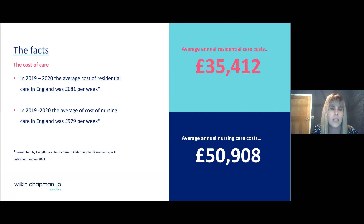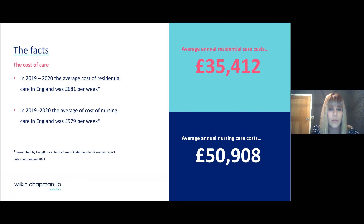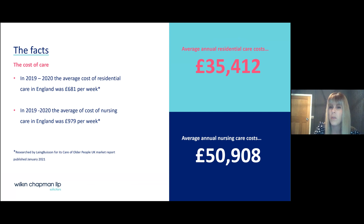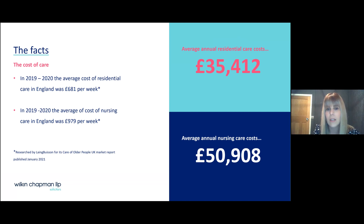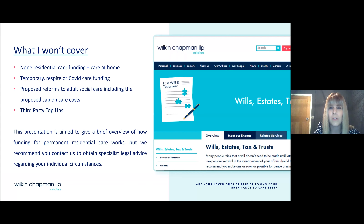In 2019 to 2020, the average cost of residential care in England was £681 per week, and for nursing care that was £979 per week. This gives annual residential care costs of over £35,000 and annual nursing home costs of over £50,000. You can see why a lot of clients are worried about this potential liability and the impact it may have on their estates and what they can ultimately pass on to their beneficiaries.